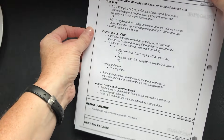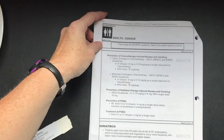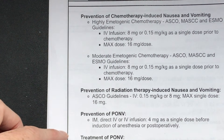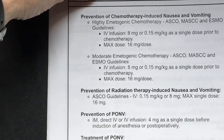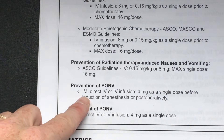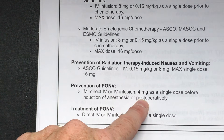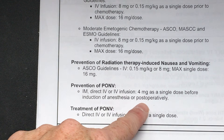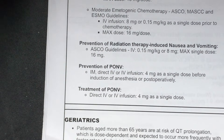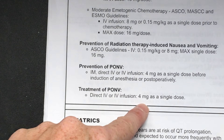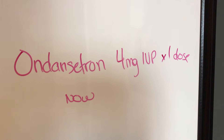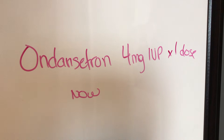The next thing you want to find is the usual dosing — here we are at the adult section. For prevention of post-operative nausea and vomiting, we can give IM, direct IV, or infusion: 4 milligrams as a single dose before induction of anesthesia or post-operatively. For treatment of post-op nausea and vomiting, direct IV is 4 milligrams as a single dose — this fits our order of 4 milligrams IV push, times one dose.